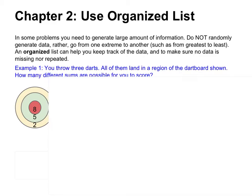So here is our dartboard. There are many ways that you can score — maybe some of the darts land in 8, 5, and 2, or all three land in region 2, or maybe 2 in 5 and 1 in 8. If you count like that, you will guarantee to miss out some of the scores. So we're going to use an organized list to list the possible scores from one extreme to another to make sure everything is covered.